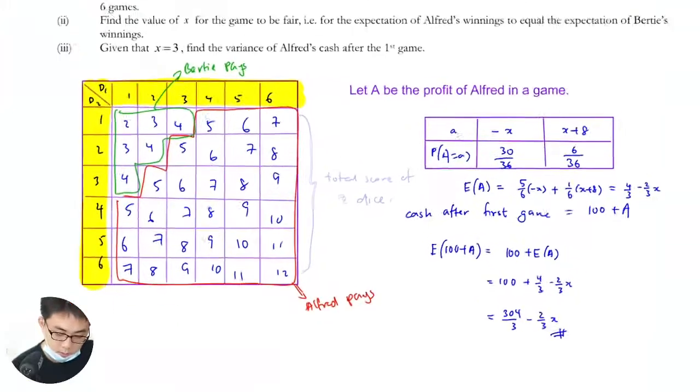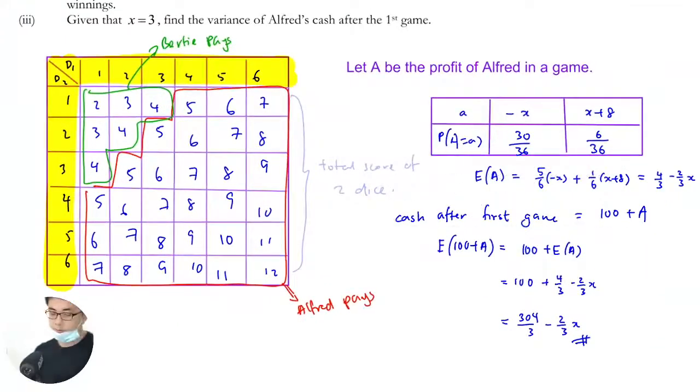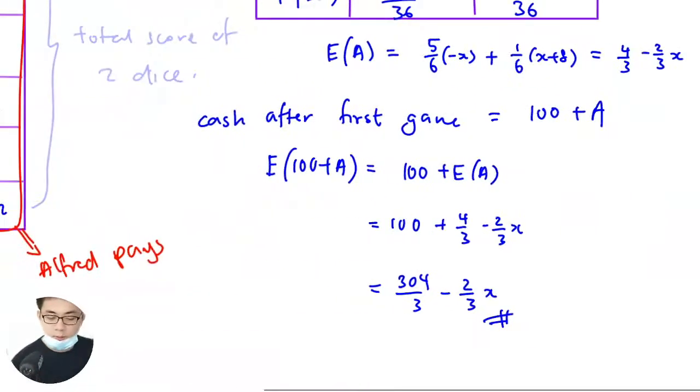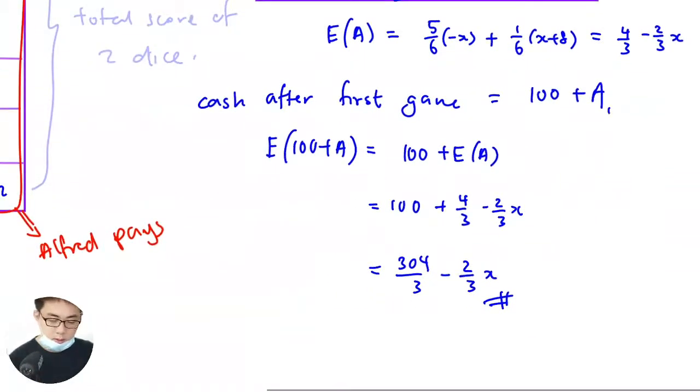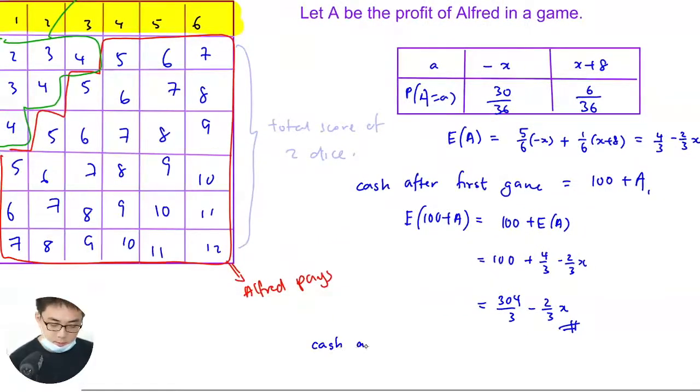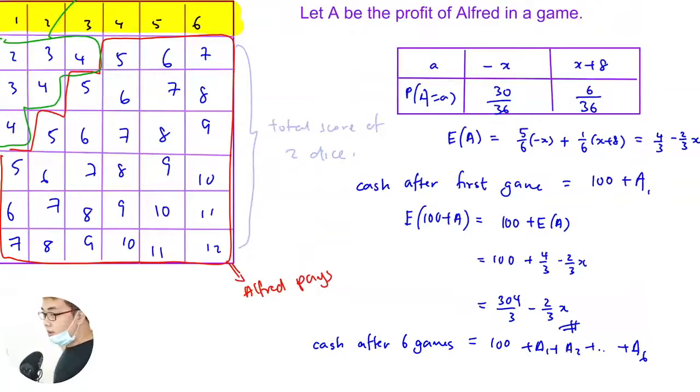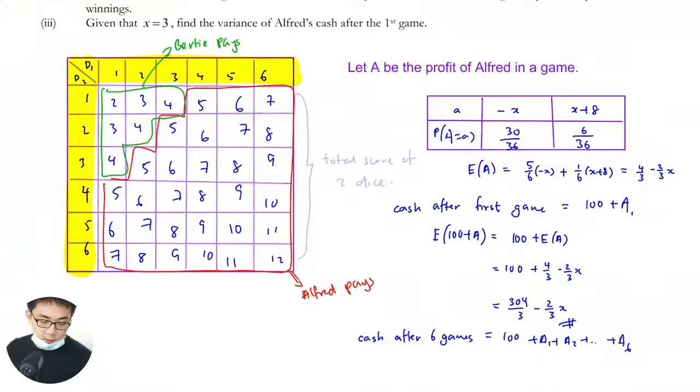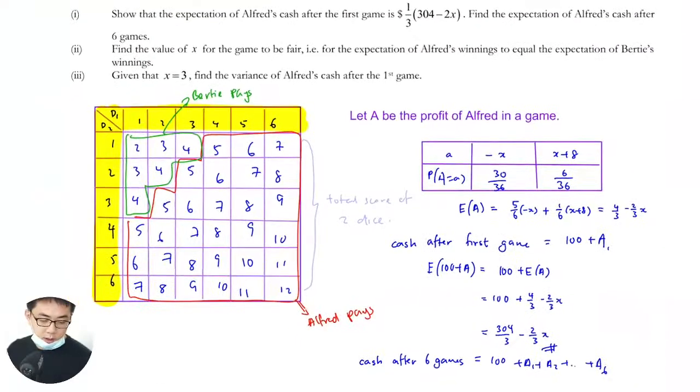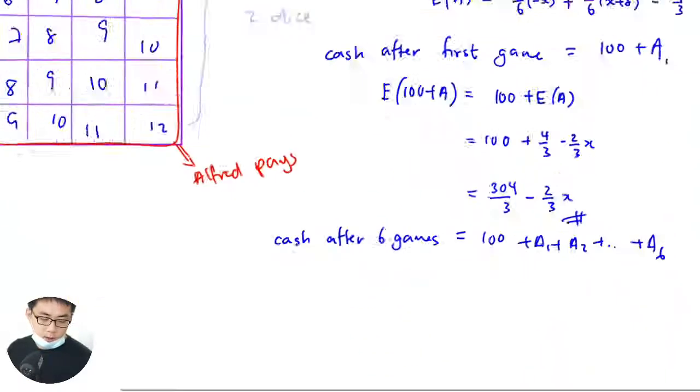Cash after six games is 100 plus A1 plus A2 all the way to A6. This is the proper way to writing it, not 6A. It's A1 plus A2 all the way to A6. It's not a multiplication. So six games will just be this.